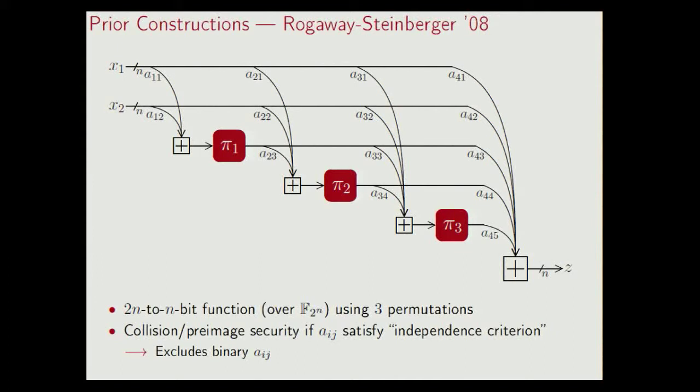While this is an interesting result, in my opinion, this also rules out some interesting compression functions. In particular, this rules out the functions where all the aij's are binary values, as was the case in the Schrimpton-Stamm compression function. I really think that this compression function design with binary values is the most interesting type of design. Those are simpler, more intuitive, and they also result in a slight efficiency improvement.